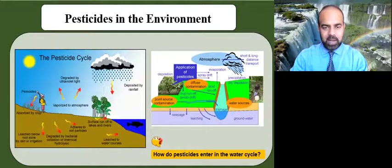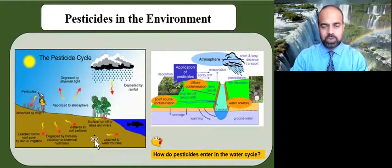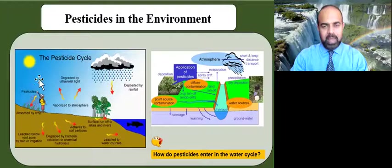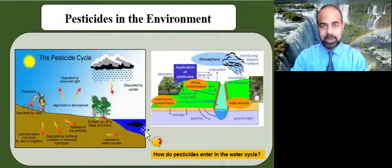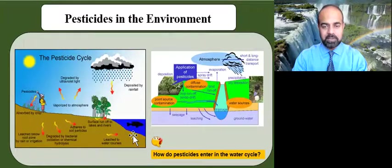It can be degraded by bacterial oxidation, by chemical hydrolysis, as well as can adhere to soil particles. And when the rain comes in, that can be washed away and lead to surface runoffs, and that pesticide can go to lakes and rivers and accumulate in lakes and rivers.